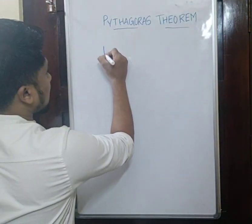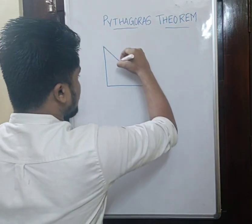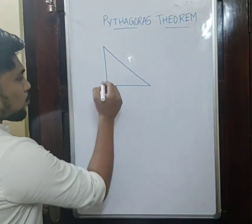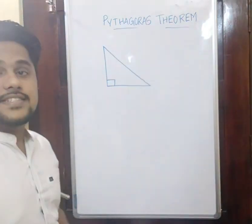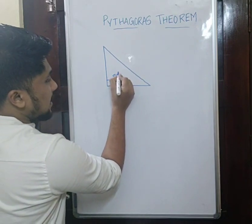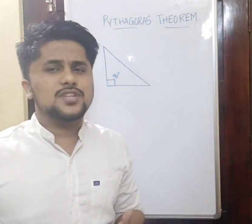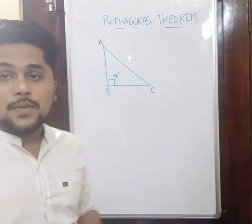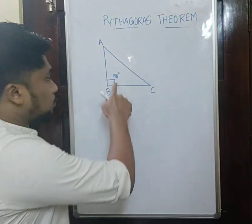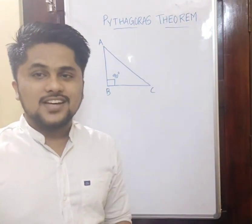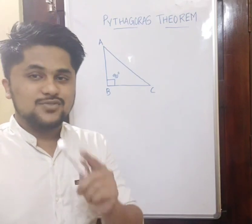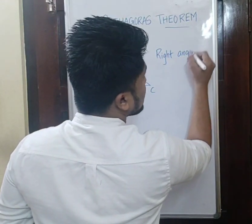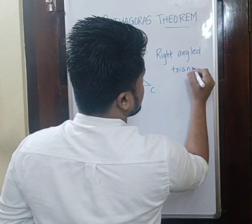First of all, I'm drawing a triangle here. Do you know what is the speciality of this triangle? Yes, exactly — one of the angles of this triangle is 90 degrees. We all have names, so I'm going to give some names for this triangle as well — A, B, C. So the triangle name is triangle ABC.